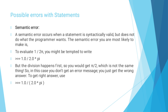Possible errors with statements: a semantic error occurs when a statement is syntactically valid but does not do what the programmer intends. The semantic error you are most likely to make is in evaluating 1/(2π) — you might be tempted to write '1.0 / 2.0 * pi', but the division happens first, so you would get pi/2, which is not the same thing. In this case, you don't get an error message — you just get the wrong answer. To get the right answer, use '1.0 / (2.0 * pi)'.